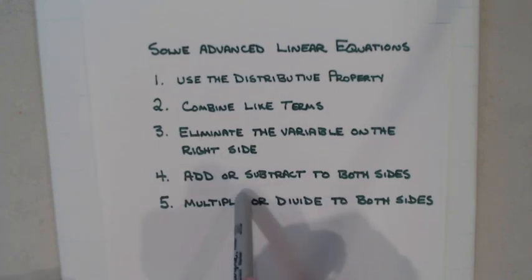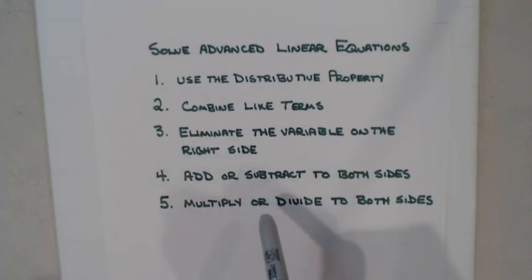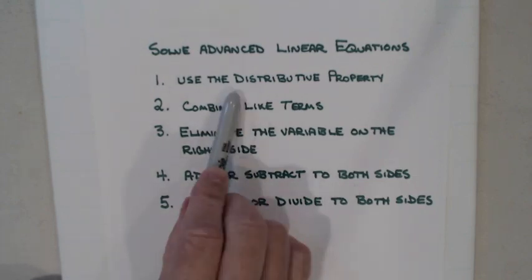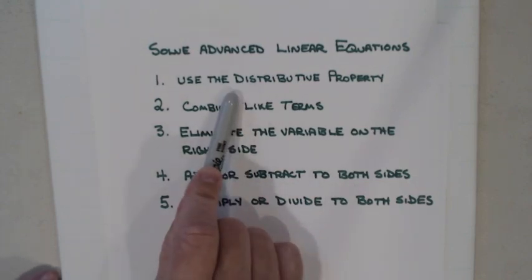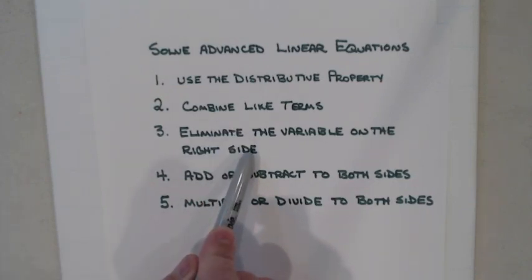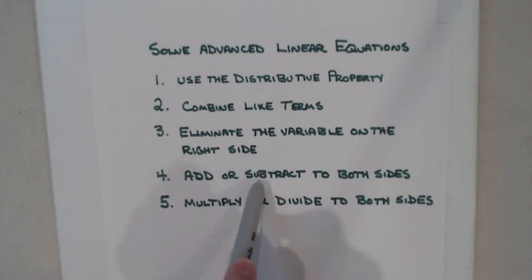Then you go to adding and subtracting — add and subtract to both sides — and then multiply and divide. This is almost like a checklist of things to check and see: distributive property first if you need to, combine like terms next if you need to, get rid of the variable on the right side if you need to, then add or subtract, then multiply and divide.